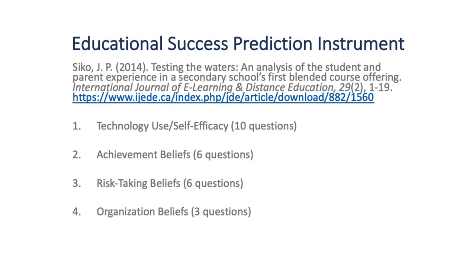At present, the instrument includes 25 questions around four areas. While Jason Psycho has not been part of this team, this particular article is referenced because there is a copy of that 25-item instrument that you can use in the appendices. The article also includes a detailed description of how to score the instrument.